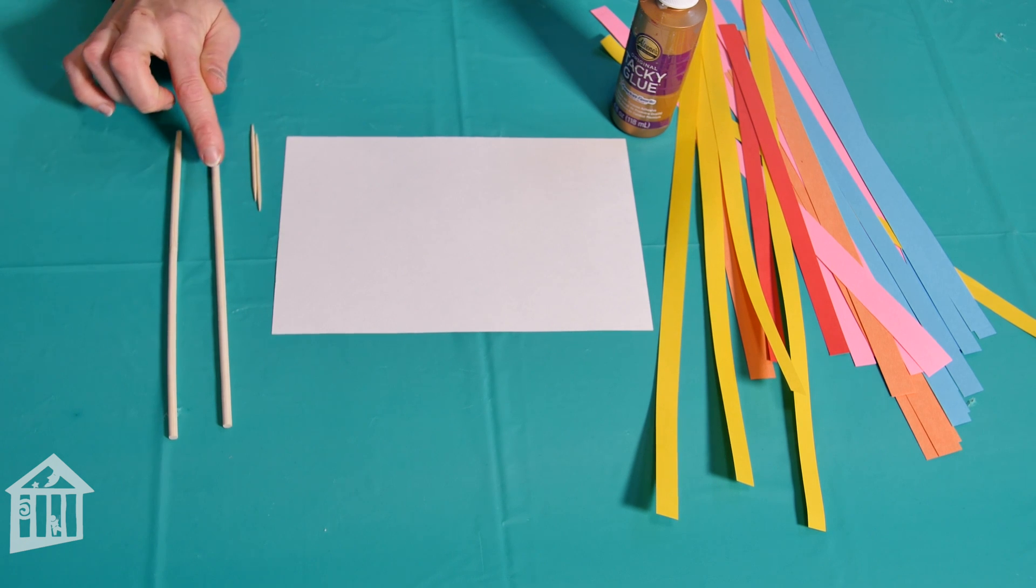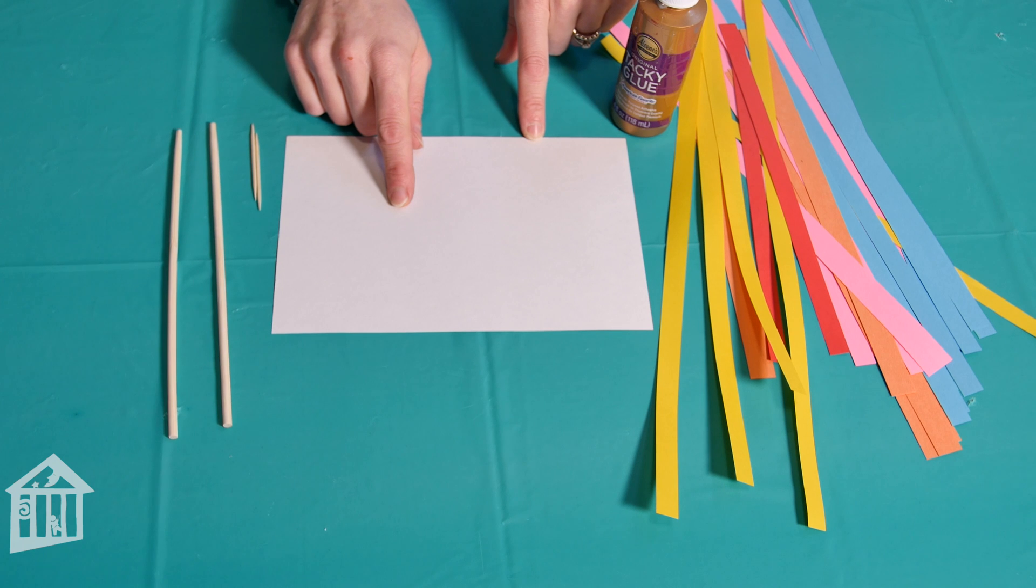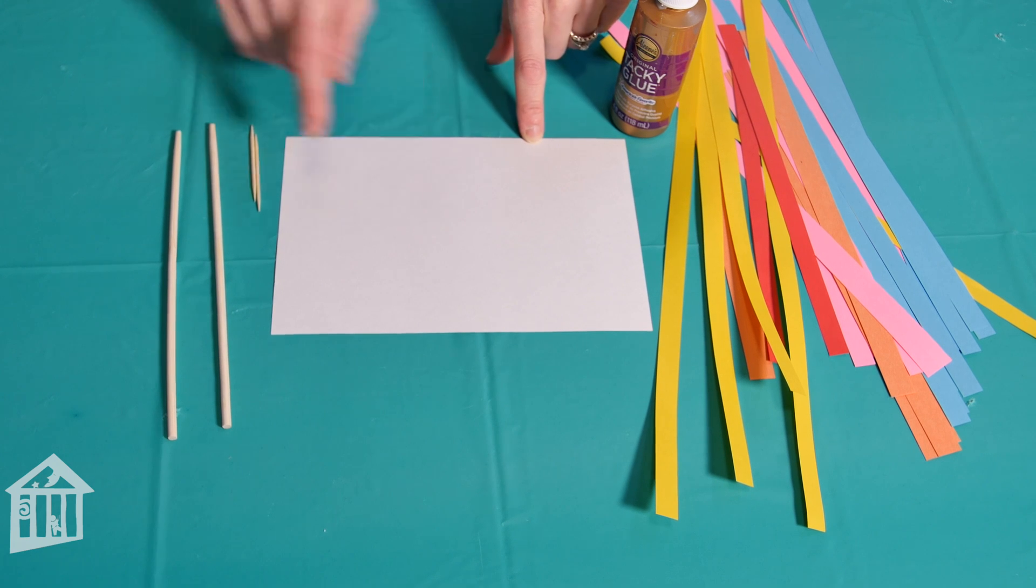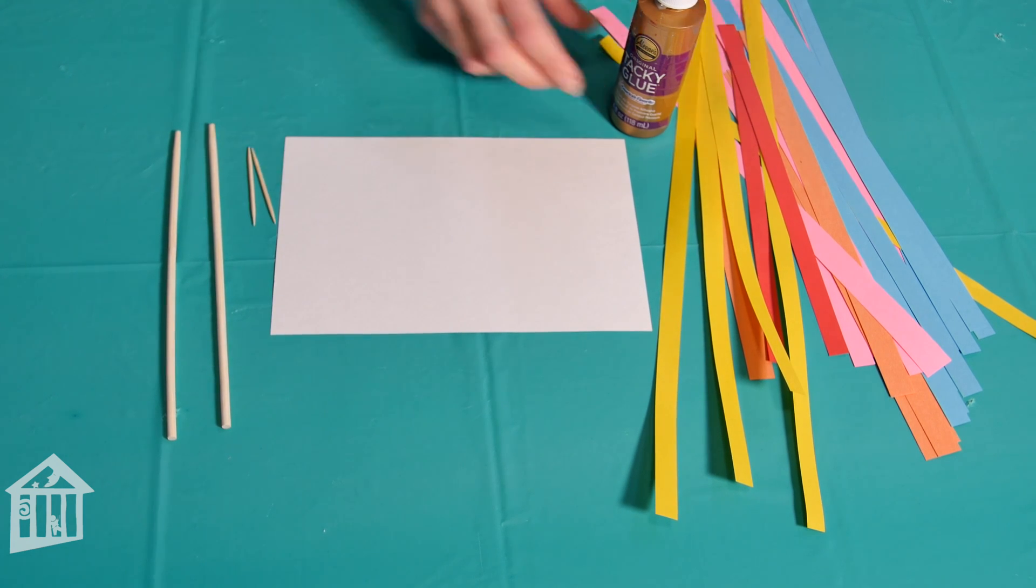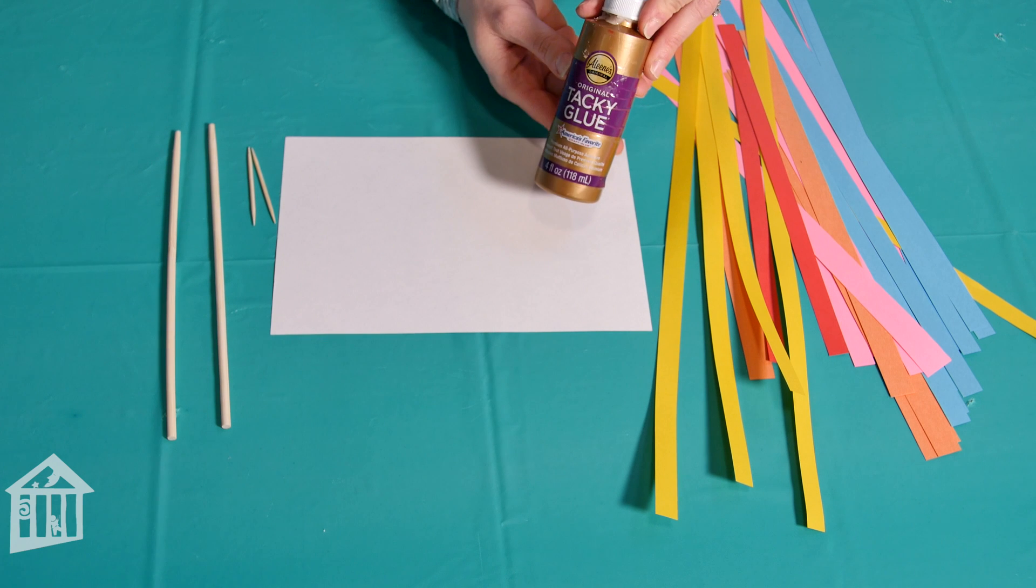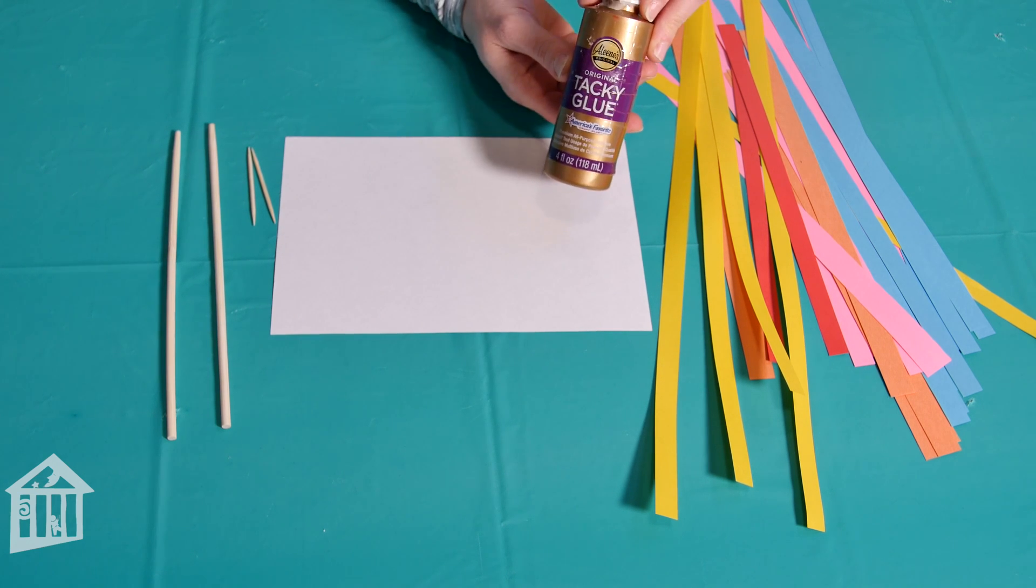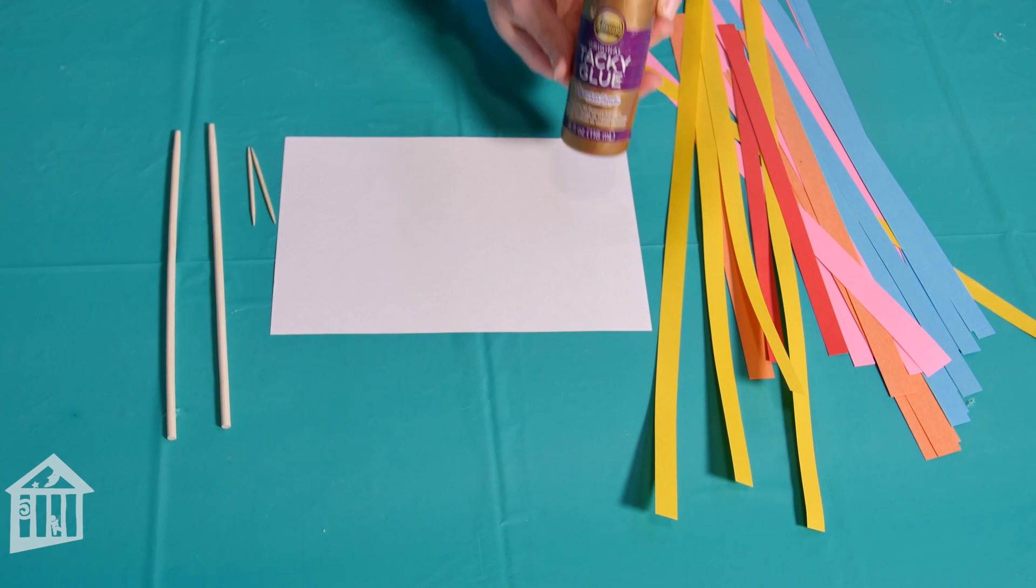Chopsticks work really well or if you want to do a super detailed paper quilling piece of artwork you can use toothpicks and some craft glue. You can use school glue or even a glue stick but craft glue holds the quickest.